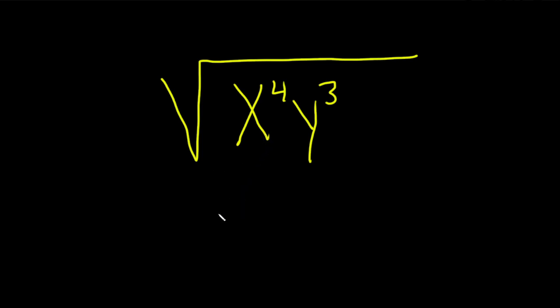So the x to the fourth can be written in a really nice way. We can write that as x squared parentheses squared. And that's because 2 times 2 is 4.